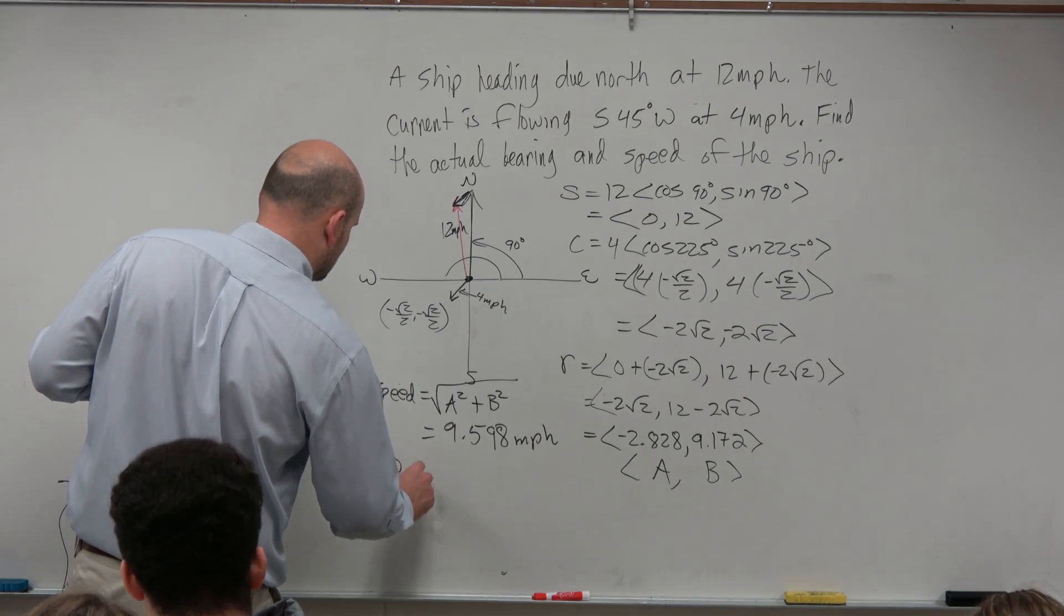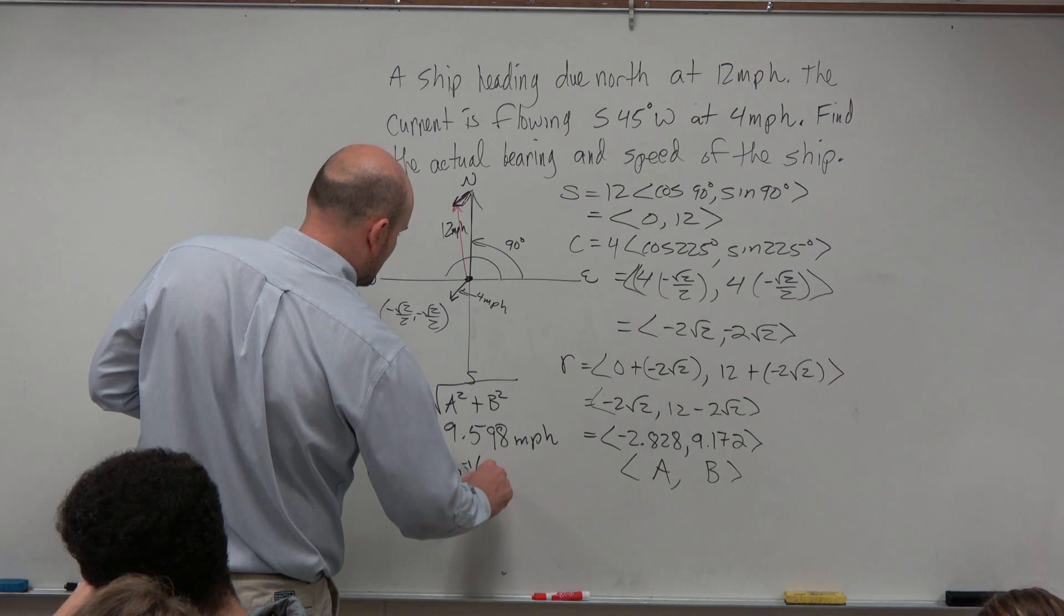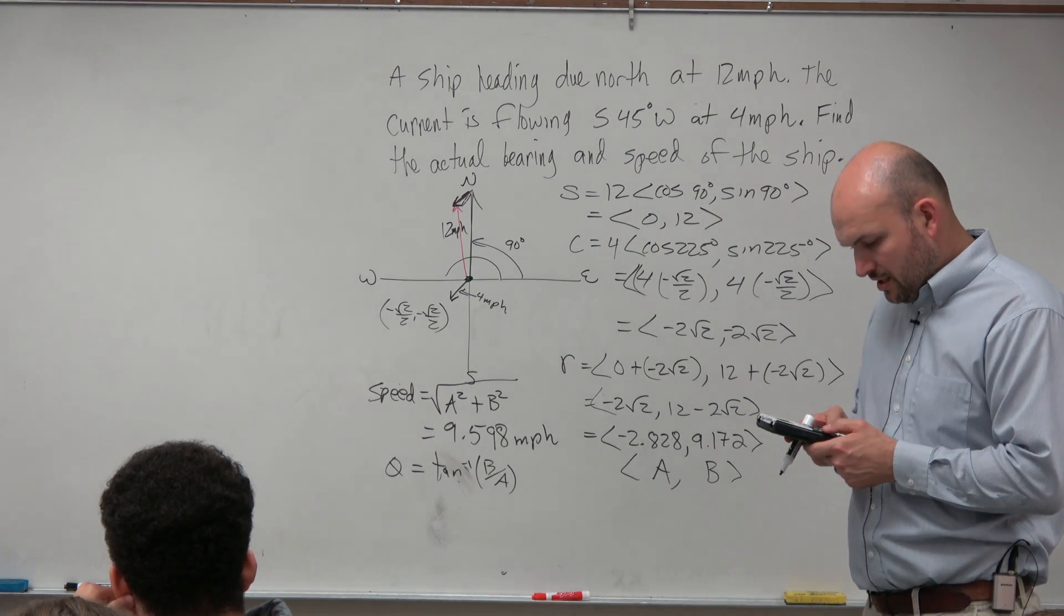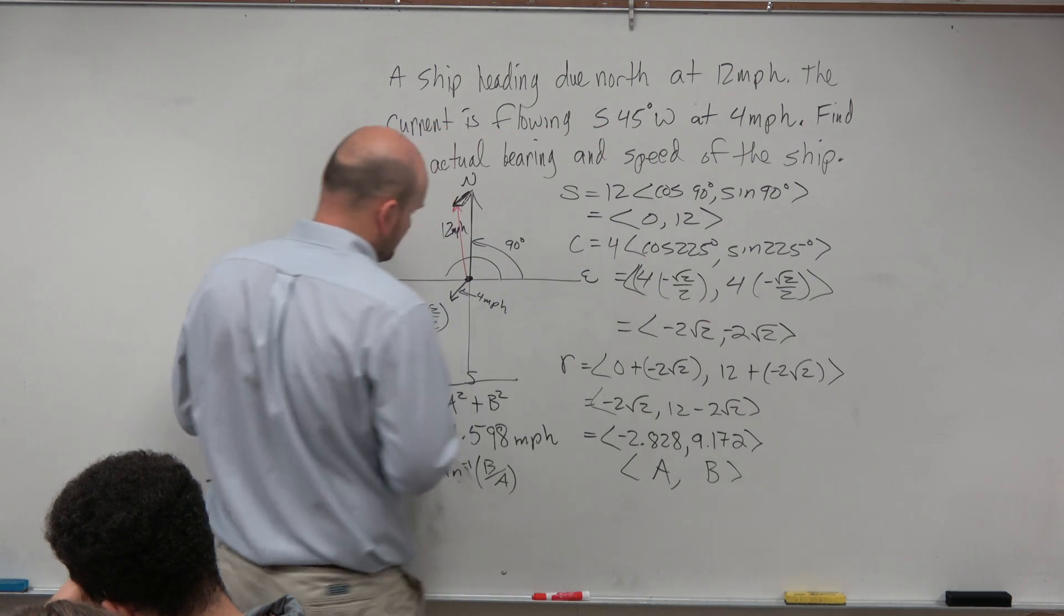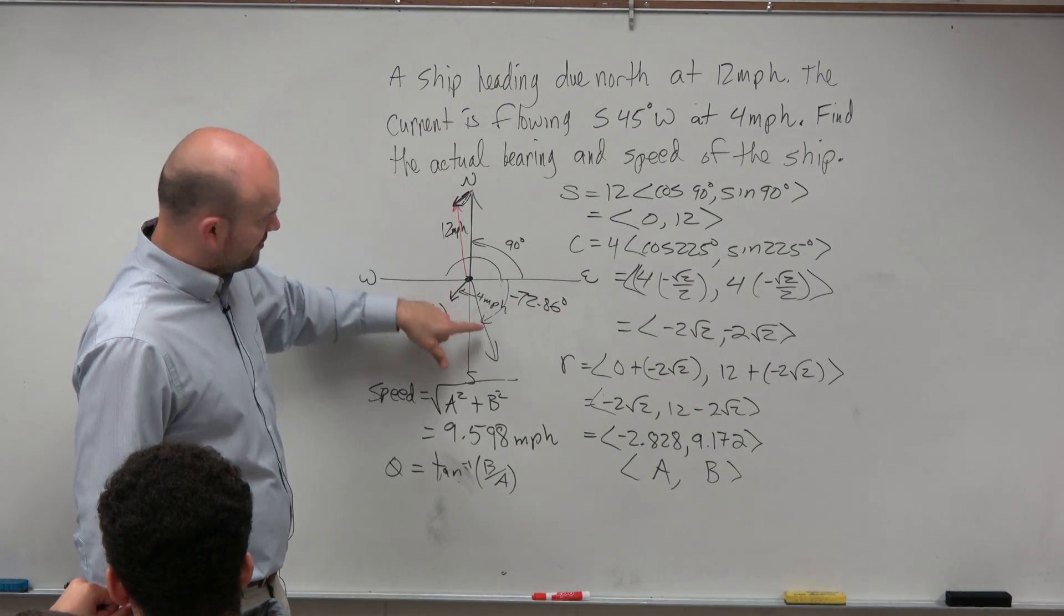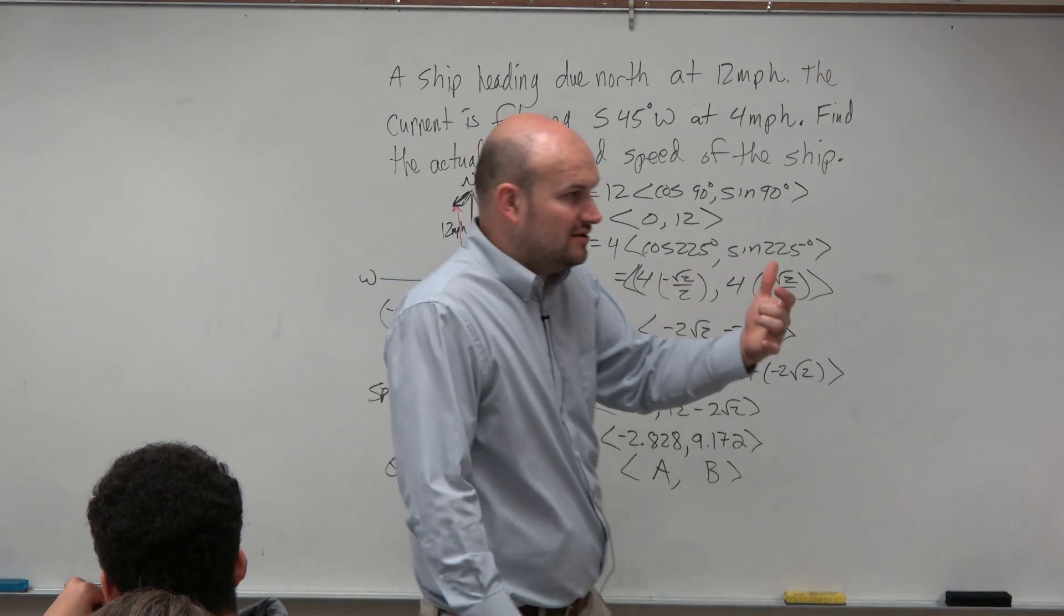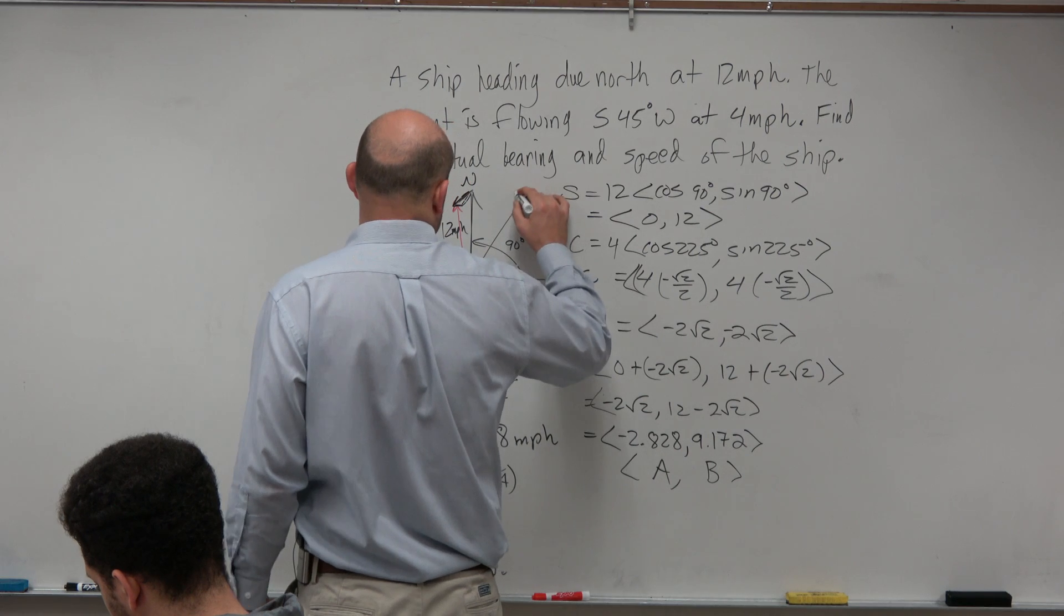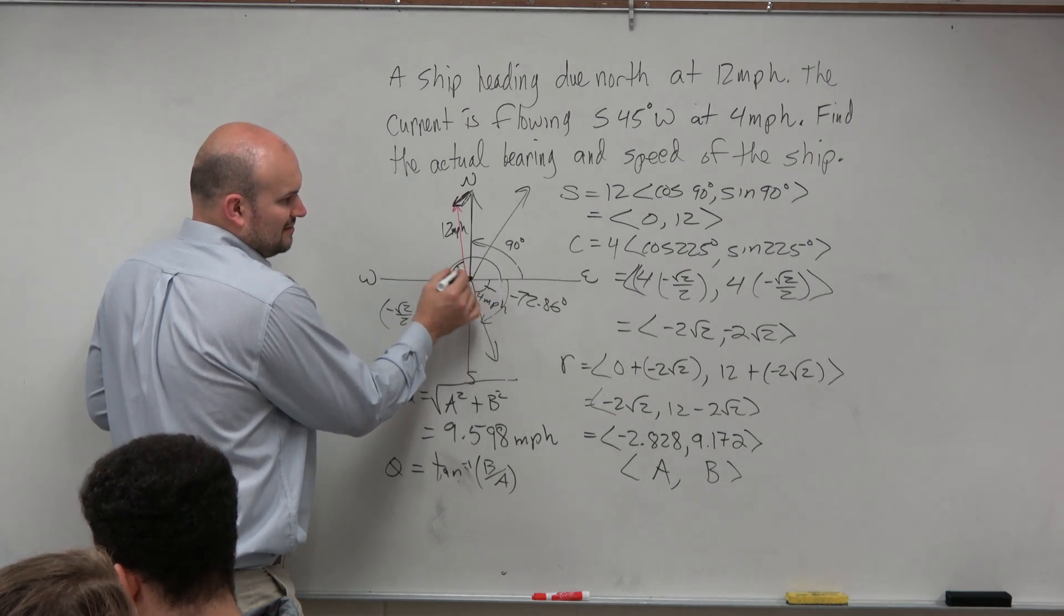And then we can find the angle. So now the angle, remember, is tangent inverse of B over A. Right? And that formula is already provided to you over there. So I'll do tangent inverse. Make sure you're in degree mode of alpha B divided by alpha A. I get negative 72.86. Well, that doesn't look right. Should it look like my angle is going this direction? If I'm going due north and I'm going that way, should I be going down there? No. Right? But remember, that's because the calculator is restricted. So what angle should make sense? Well, positive 72 would be over here. Right? Again, guys, this is giving you the acute, this is giving you the reference angle.